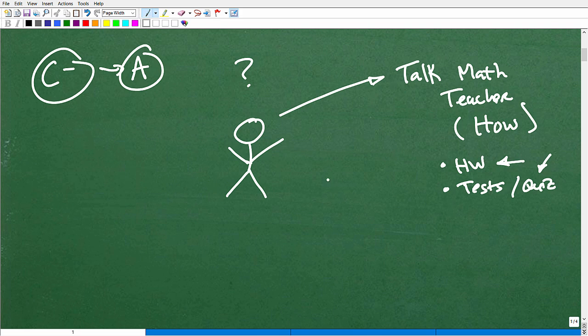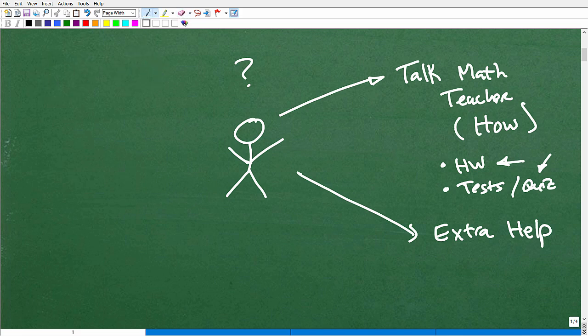So they might talk to you about your homework. They might talk to you about 'hey look, your test grades and your quiz grades are obviously not where they need to be. So you need to go back and review X, Y, Z.' Now as you're talking to your math teacher, you want to be asking specifically for extra help. You need to get extra help because obviously you didn't understand the instruction in class.